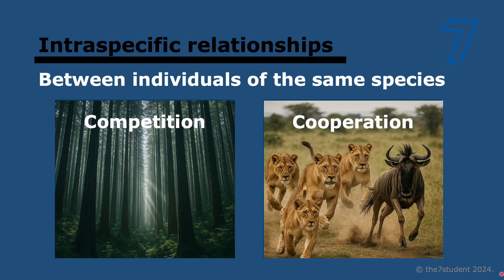Intraspecific relationships are relationships that exist between individuals of the same species, usually in the same population. Two main categories are competition and cooperation. Competition occurs when resources are scarce and members share the same ecological niche, leading to natural selection — for example, competition for light in plants, for insects to pollinate, for breeding sites, or for food. Cooperation provides a strong advantage to all individuals, such as hunting in packs, communal roosting to preserve heat, or parental care.